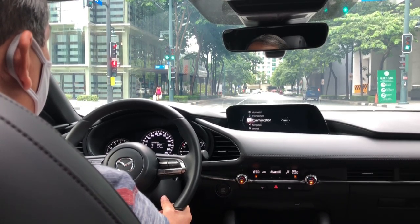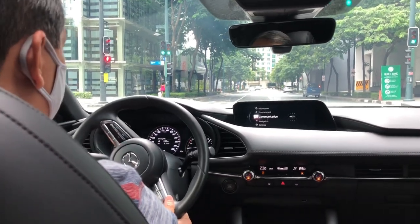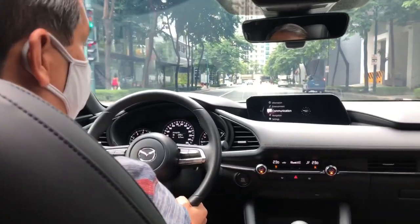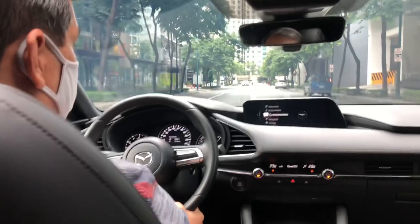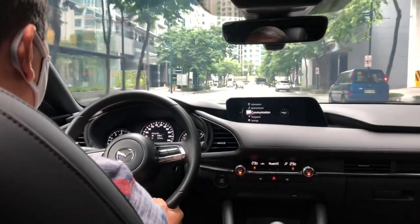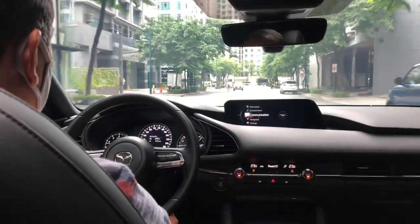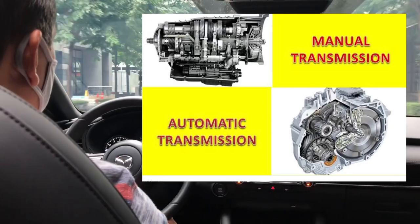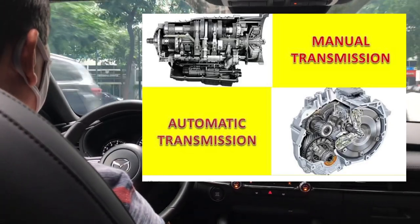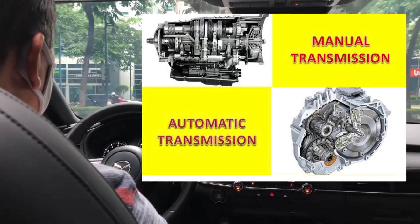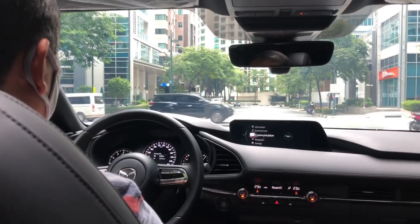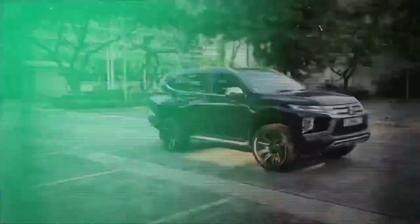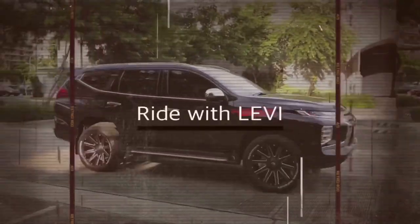Once the engine starts rotating, the torque generated is transmitted to the transmission. Inside the transmission there are many gears with different gear ratios, which are used to vary the speed depending on the need of the car. The transmission can be either manual or automatic.